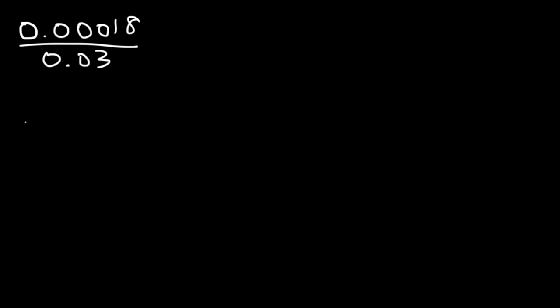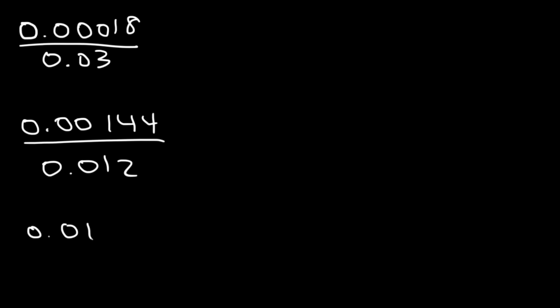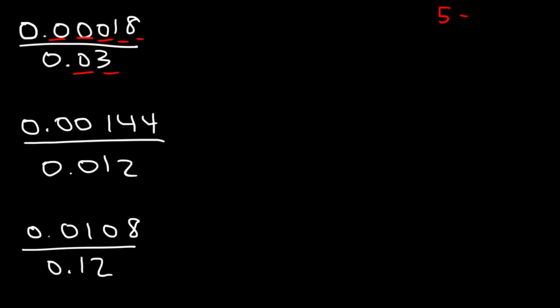Now it's your turn — try these three. Feel free to pause the video as you work on these examples. Let's start with the first one. On top there are five digits, and on the bottom there's two. 5 minus 2 is equal to 3, so the final answer should have three digits. 18 divided by 3 is 6, so this is going to be 0.006.